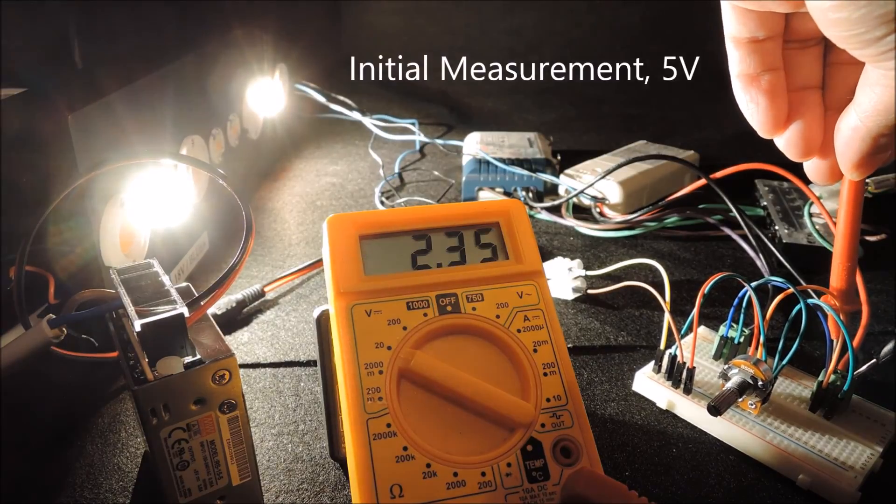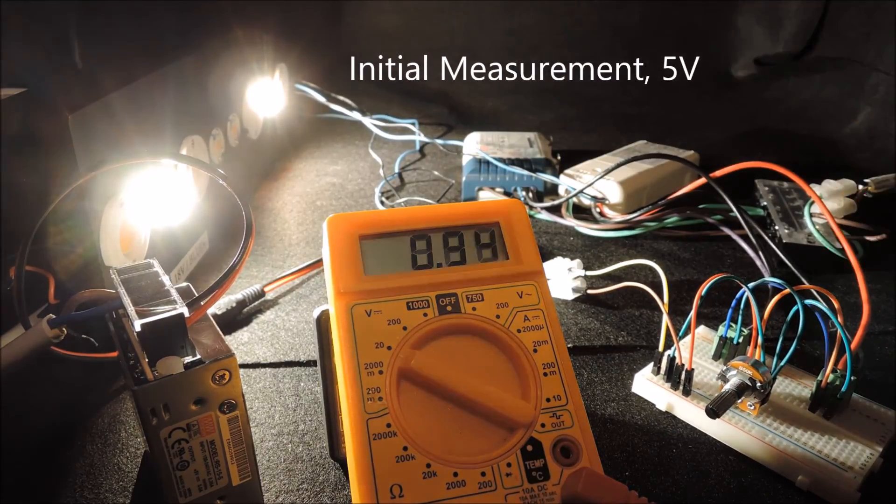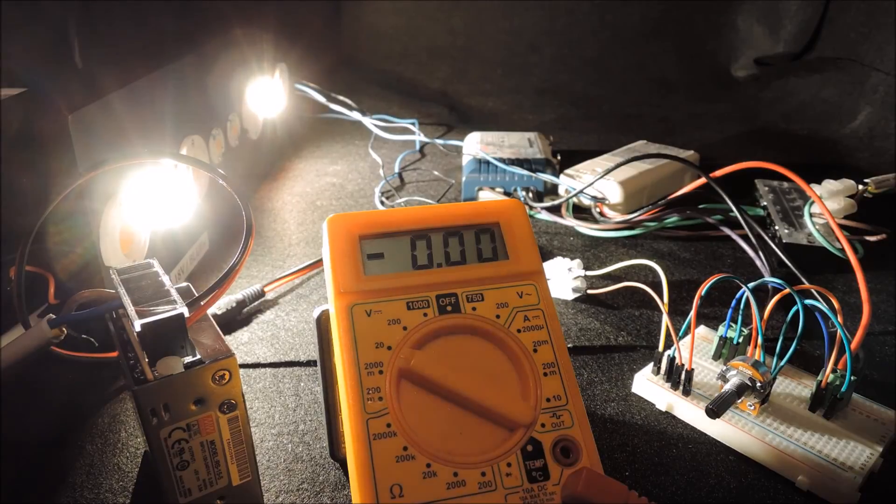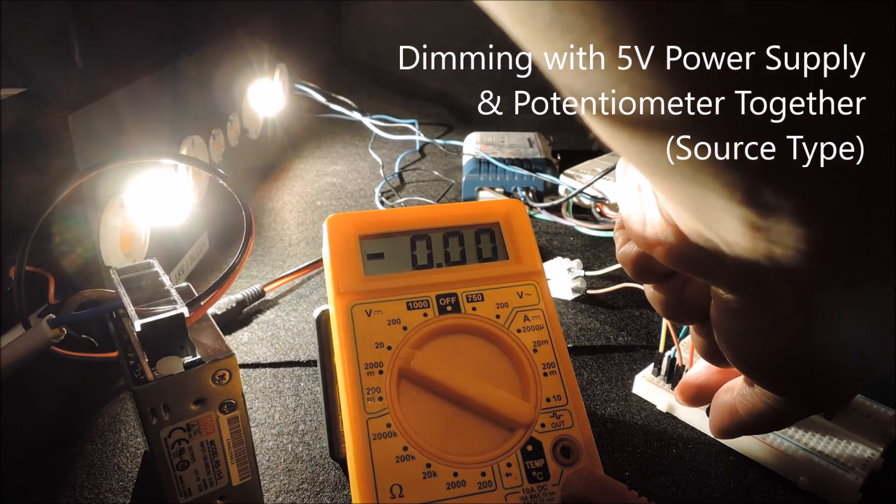Now let's take the initial measurements and you will see 5V that is being fed into both drivers and we start the dimming operation.